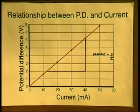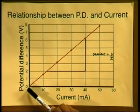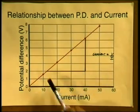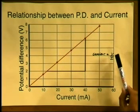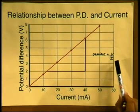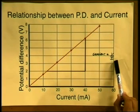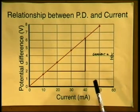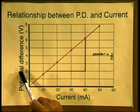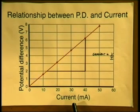Let's now refer back to our graph of potential difference against current. We have our straight line graph with a constant gradient, where the gradient is equal to our ratio of V divided by I. Thus, both the calculation using the table of results and the graph confirm that potential difference is directly proportional to the current passing through the resistor.